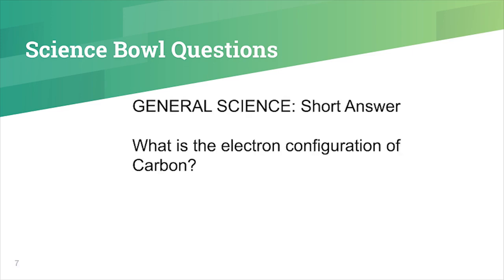General science, short answer: What is the electron configuration of carbon? The answer is 1s², 2s², 2p².